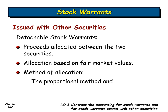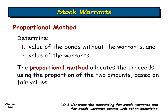We are going to understand how to calculate the amount related to the warrant alone and the amount related to the bond or security alone. When we issue this type of paper in the market, we attach both at the same time — we sell one paper with another attached to it: one for the security (a bond or similar) and one for the warrant. We use the proportional method to calculate the value of each, the bond value and the warrant value separately.